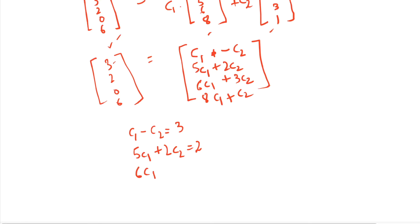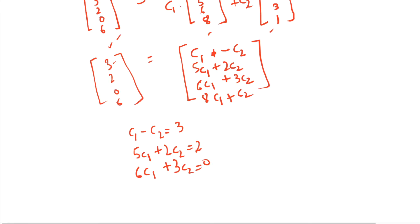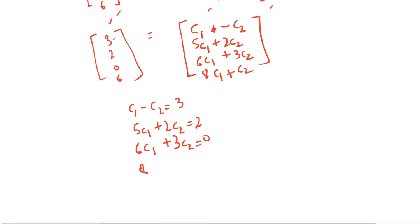6c1 plus 3c2 has to be equal to 0, and 8c1 plus c2. So from equation 3, we get c2 equal to minus 2c1, right? And from equation 1, we'll